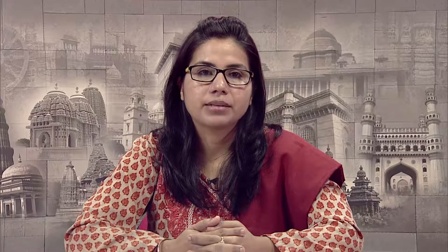Let's start with the first objective, that is about Vedic texts. What is Veda? The word Veda is derived from the root 'vid' which means to know. The word Veda means the sacred knowledge contained in the text known as Vedic text. Two categories of texts are included in the corpus of the Vedic literature. These are Mantra and Brahmana.